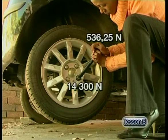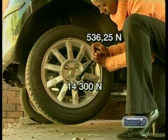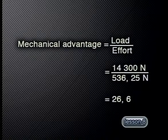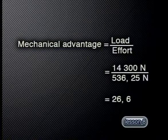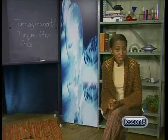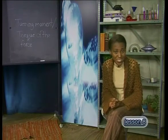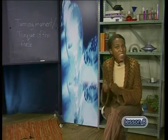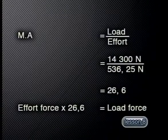The load force of 14,300 newtons is applied to the nut to make it turn. The effort force exerted on the spanner is 536.25 newtons. The mechanical advantage of the spanner is load divided by effort force: 14,300 ÷ 536.25 = 26.6. Notice that mechanical advantage is a ratio, so it has no dimensions — it is just a number which tells us how much the effort force is magnified by the action of the machine. We use the symbol MA to represent the mechanical advantage of a machine.